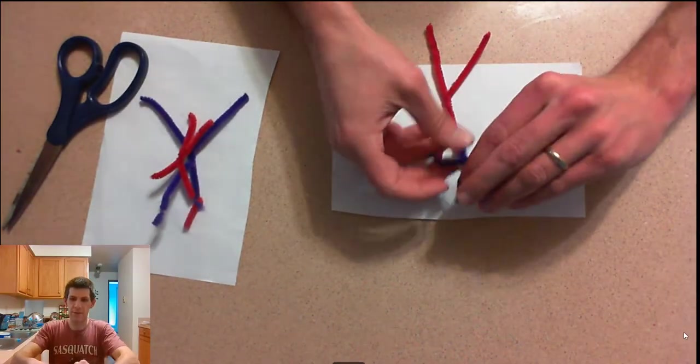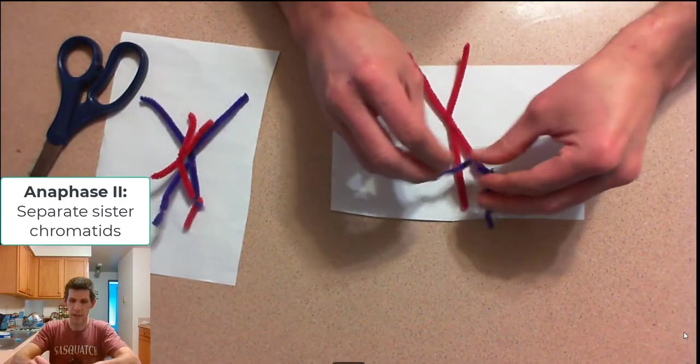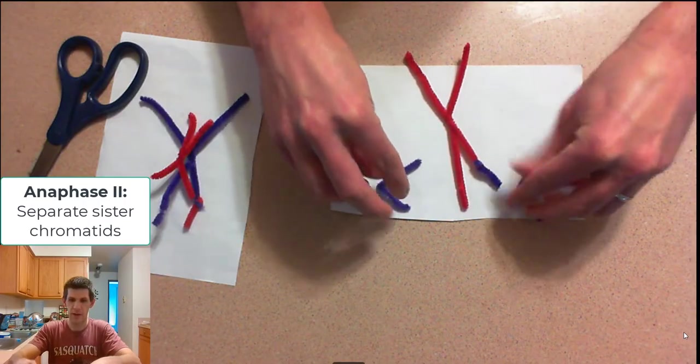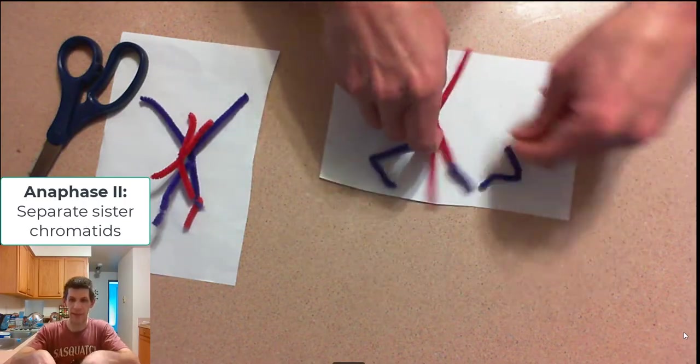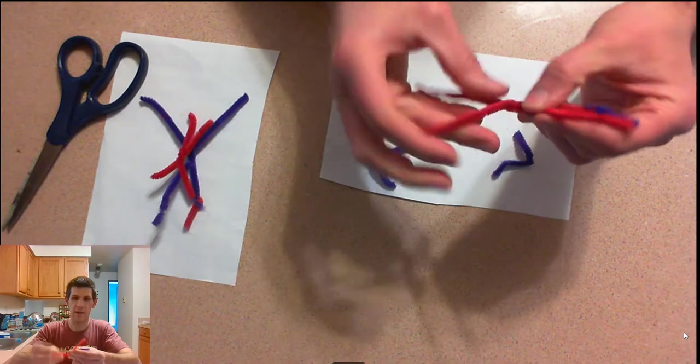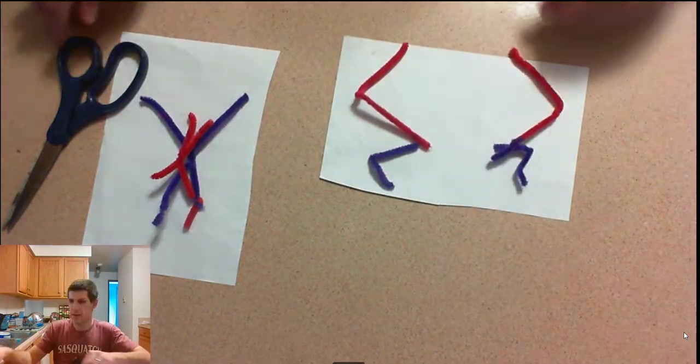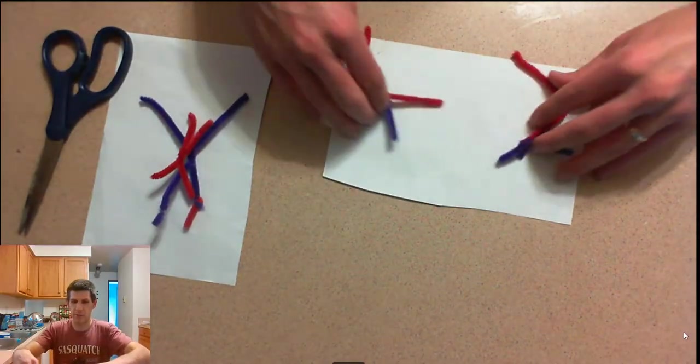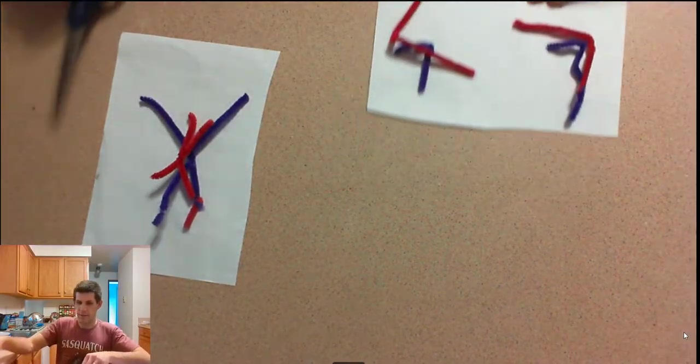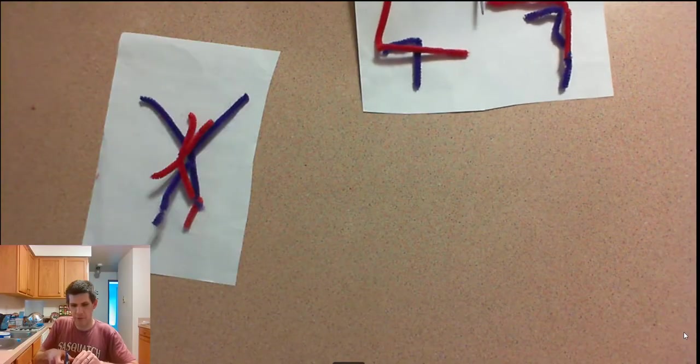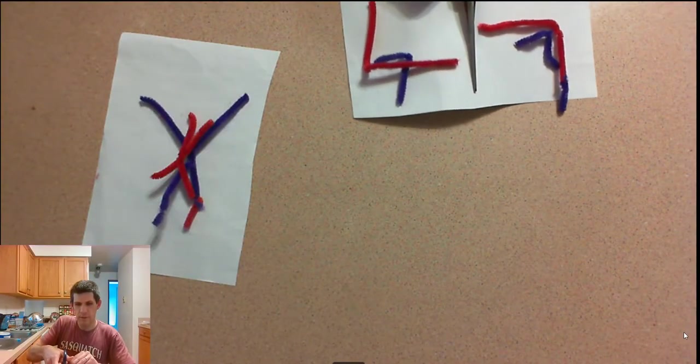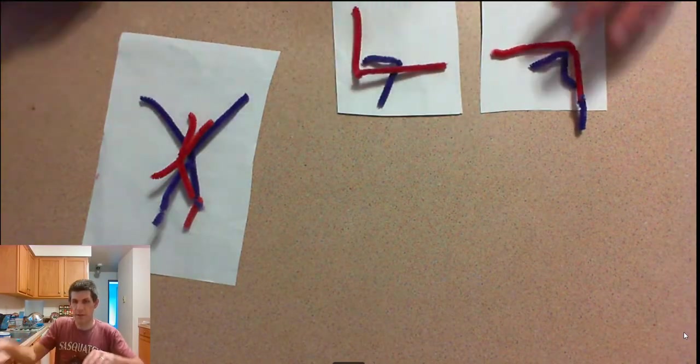Now, during anaphase, they're going to break apart, and your sister chromatids are going to head towards opposite ends of the cell. During anaphase here, and then during telophase, they'll get into new nuclei. And cytokinesis, these are all anaphase 2, telophase 2, cytokinesis here, to break them apart.